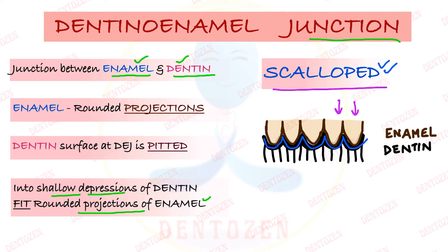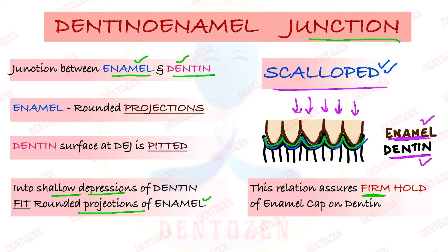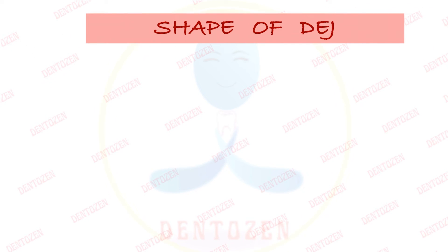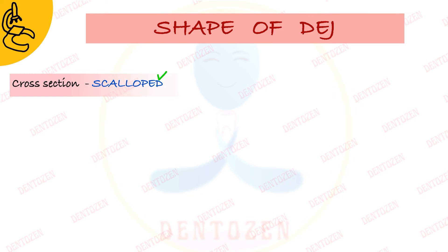This enamel is a place where a lot of masticatory stresses are present. To bear those masticatory stresses, enamel should have a strong connection with dentine. So to make that connection strong, this junction has this curved scalloped form. This relationship assures that enamel has a firm hold and firm grip over the underlying dentine, so that it remains a strong junction.